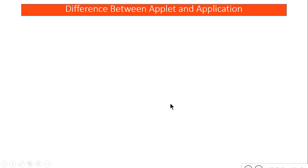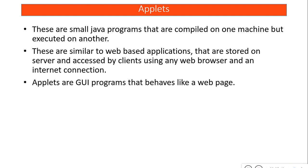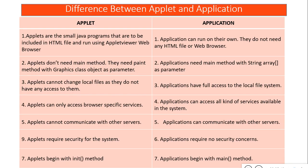To run an applet you need an HTML file as well as a web browser, but for an application you do not need these things. For a program with a main function you don't need an HTML file or a web browser. In applets we don't need a main method — we will create a paint method and pass the Graphics class object into it, whereas in the main method we use an array of strings.